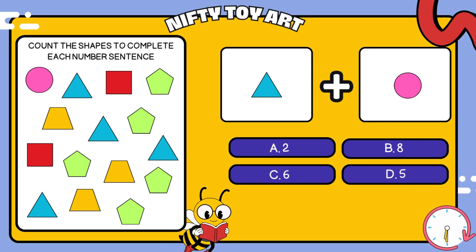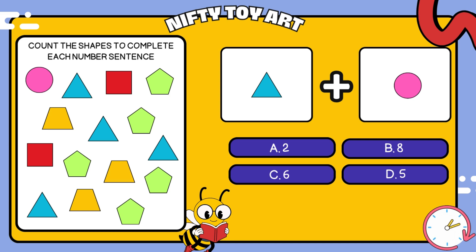I have a triangle plus circle. How many all together? That's right, five.